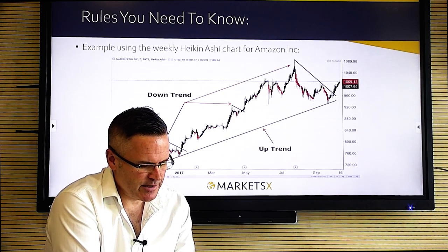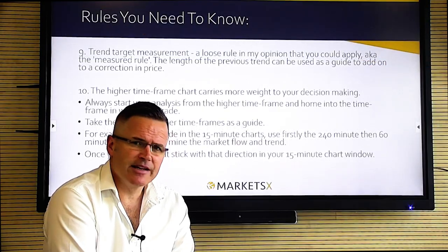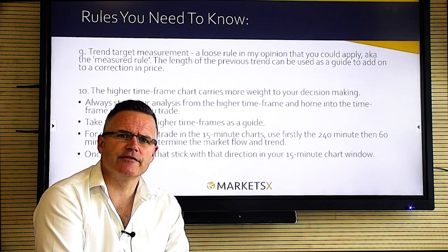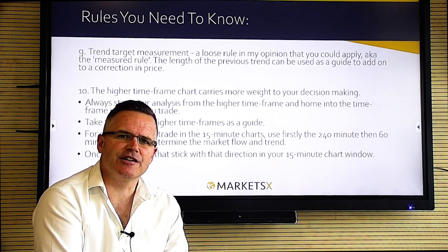Changes in trend are critical for your trades. Rule nine: if you want to measure how far a trend goes, there's a loose rule called the measured rule — the length of the previous trend can be used as a guide to add on to a correction in price. Rule ten: the higher time frame chart carries more weight to your decision making. A lot of traders fall over by jumping between chart time frames — trading on the hourly chart but placing stops based on the 15-minute chart, and getting taken out.